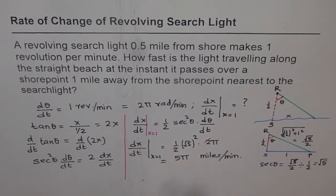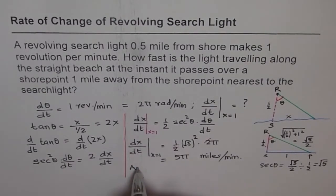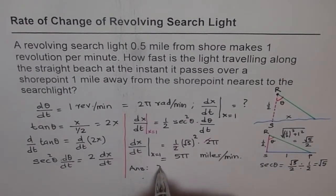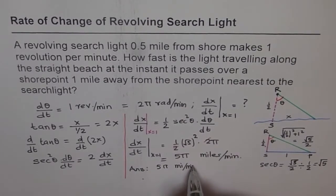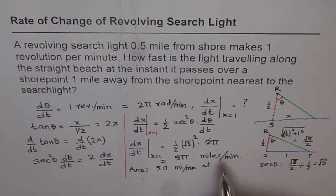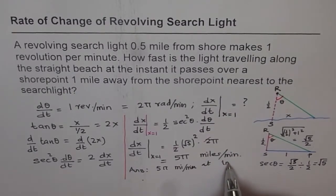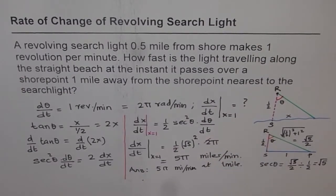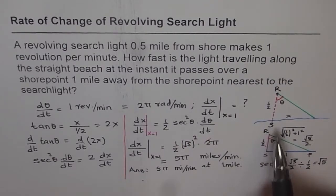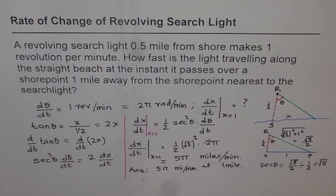The light is traveling at 5π miles per minute at a distance of one mile from the nearest shore point. That is your final answer.